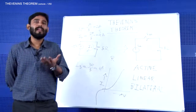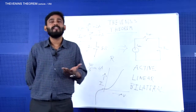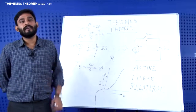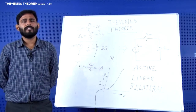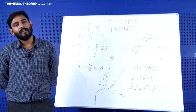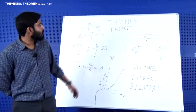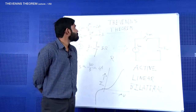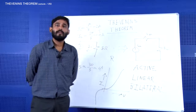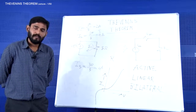Any element made of semiconductor devices can be considered a unilateral element. We will go deeper into the theorem in the next session. Thank you.